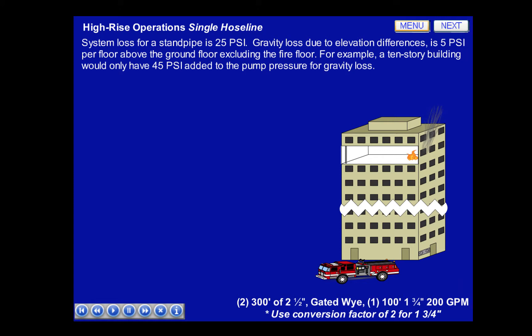In this problem, there are two 300-foot 2.5-inch supply hoses, a gated Y, one 100-foot inch and three-quarter attack line flowing 200 GPM. Do not forget to use the conversion factor of 2 for the inch and three-quarter line.